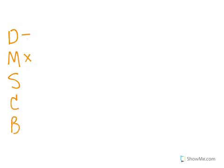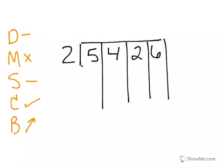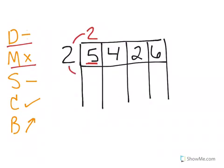We're going to try one more. Does McDonald's sell cheeseburgers? Divide, multiply, subtract, check, bring up my number. This time we're going to go 2 into 5,426. I'm going to make longer boxes. My first thing is 5 divided by 2 — 2 will go into 5 two times. So I divided. Now I want to multiply: 2 times 2 equals 4. Now I subtract: 5 minus 4 equals 1. I check — this number is less than this number. So now I bring it up.